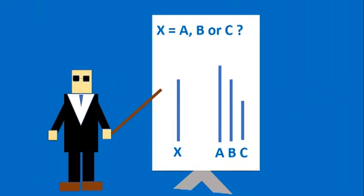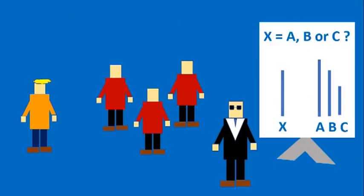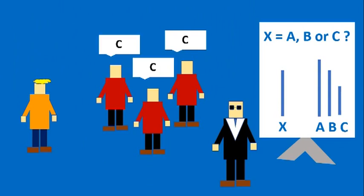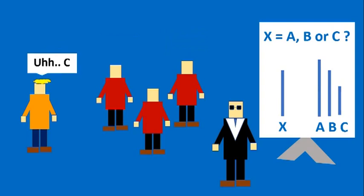In the experiment, Solomon Asch asked the participants, as well as the confederates in the room, which of these lines equals the target line. For every single trial, the right answer was always going to be obvious. If the participant in the critical trials sided with the majority of the confederates and chose the wrong answer, it would be obvious that social pressure had led to conformity.